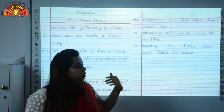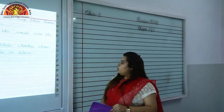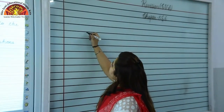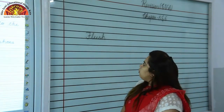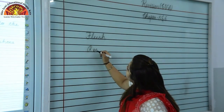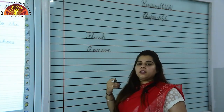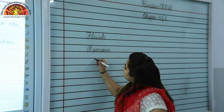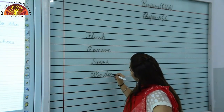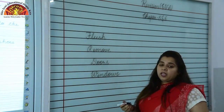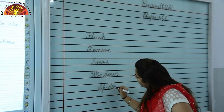Now we will see hard words of this chapter. First spelling: Flush — F-L-U-S-H. We should always flush the toilet after use. Second: Remove — R-E-M-O-V-E. We should always remove the cobwebs. To let fresh air enter the house, we open doors — D-O-O-R-S — and windows — W-I-N-D-O-W-S. Cobwebs are made by spiders — S-P-I-D-E-R-S.